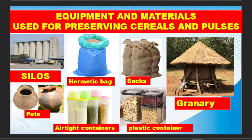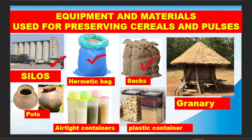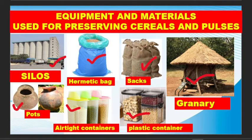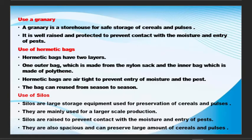Let's look at some of the equipment we can use to preserve the cereals. Larger companies like the Cereal Board in Kenya use them to store various seeds and pulses. You can use a sack, a hermetic bag, a granary, a pot, an airtight container, a plastic container, or a box — anything that will help you to preserve the cereals.